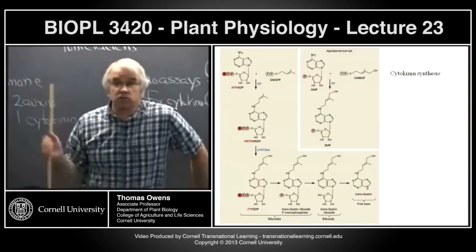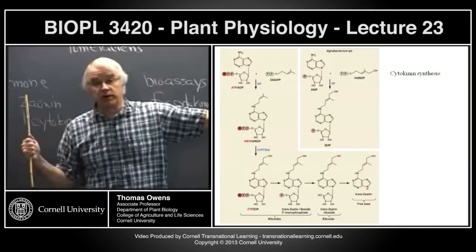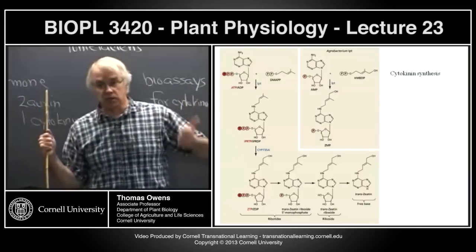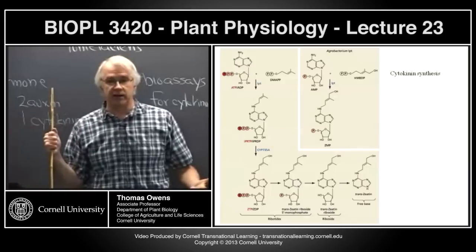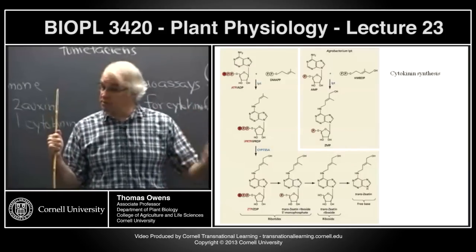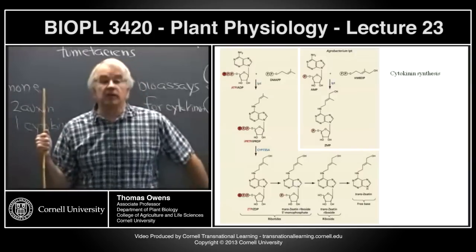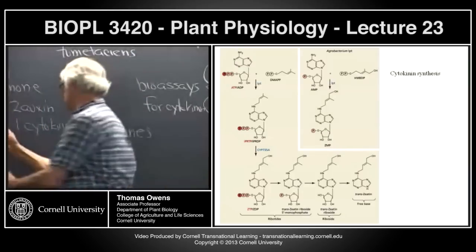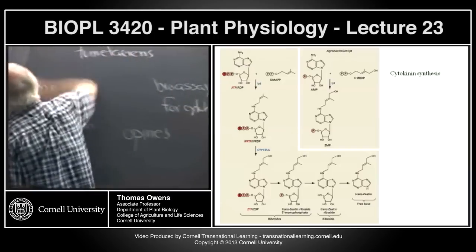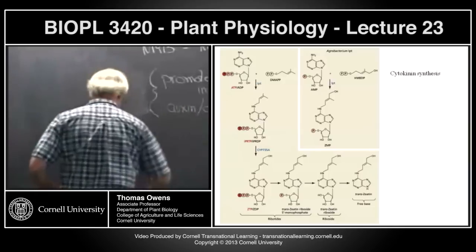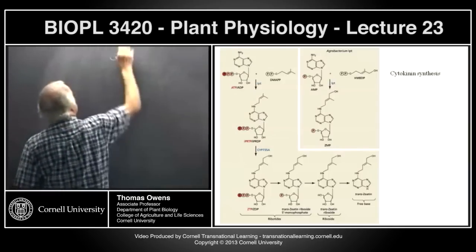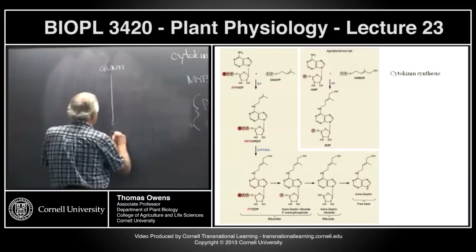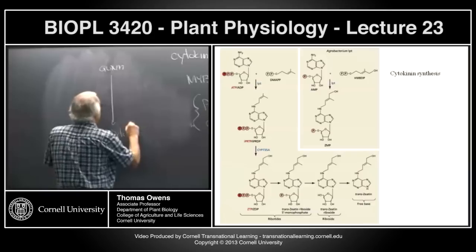Where are cytokinins made? Root apical meristems must make cytokinins because in culture, root apical meristems can continue to divide with no addition of hormones. The root apical meristem must produce its own auxin and its own cytokinin. Much of the cytokinin in the plant is coming from the root apical meristem — in contrast to auxin, which is produced in the shoot and transported downward.